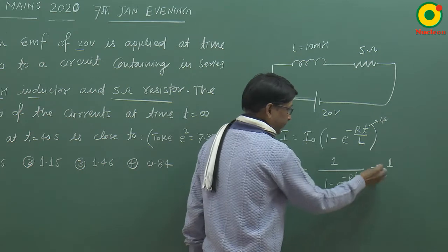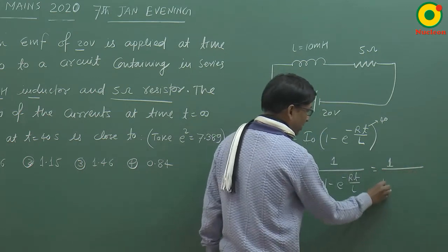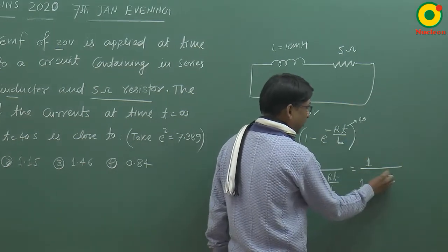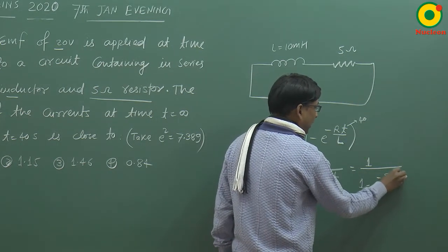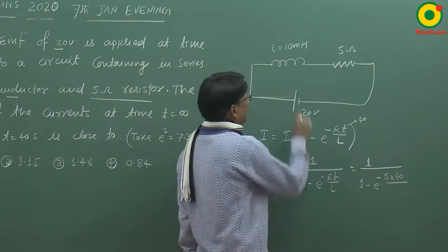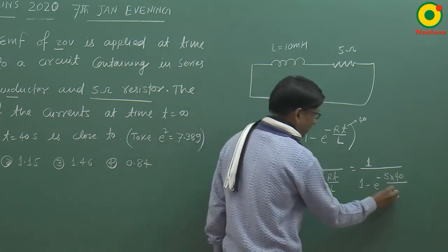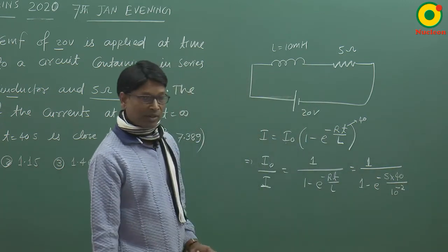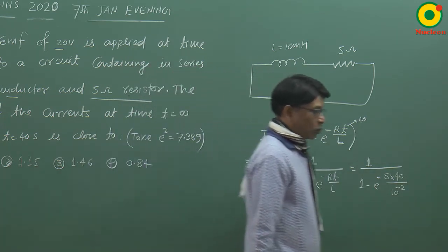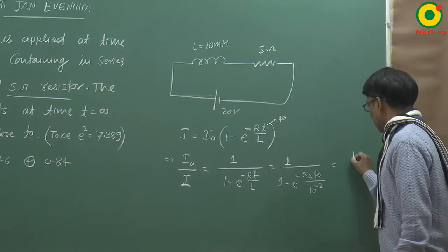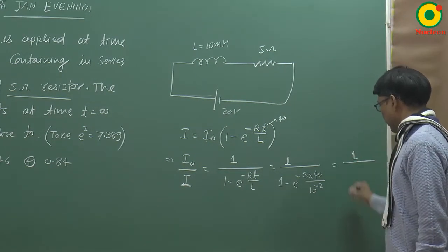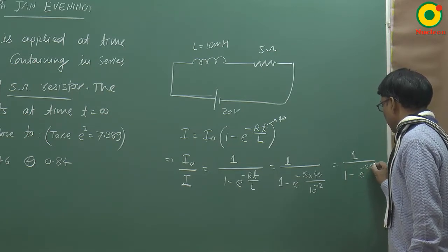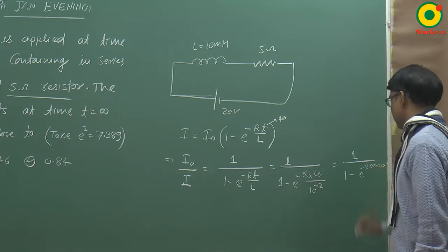तो 1 divided by (1 - e^(-Rt/L)) में resistance 5 ohm दिया गया है, time 40 second दिया गया है, और inductance 10 millihenry दिया गया है। Values रख दिए तो ये आएगा: 1 divided by (1 - e^(-20,000))